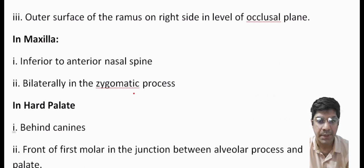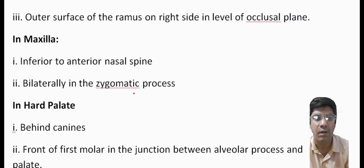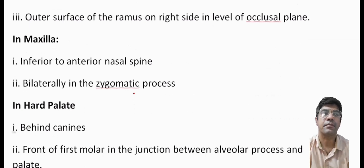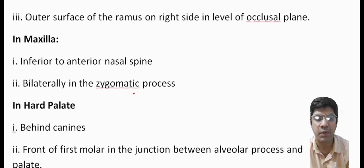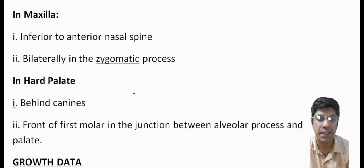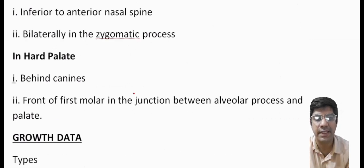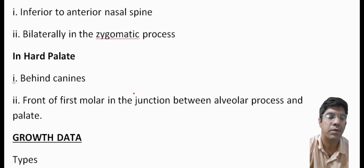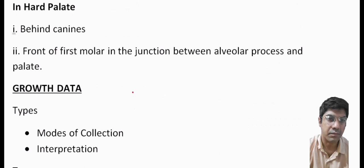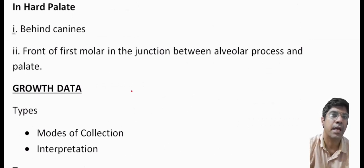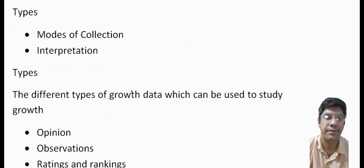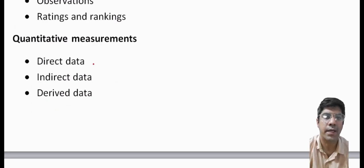Other methods include natural markers — features within the bone like nutrient canals and trabeculae that can serve as markers for studying growth. Genetic studies help identify the genetic factors that influence growth and development. Growth data can be either direct data, indirect data, or derived data.